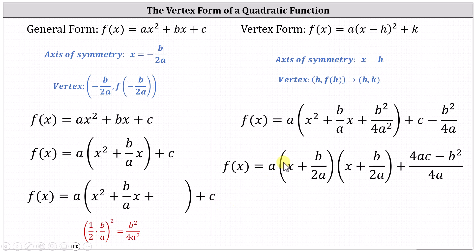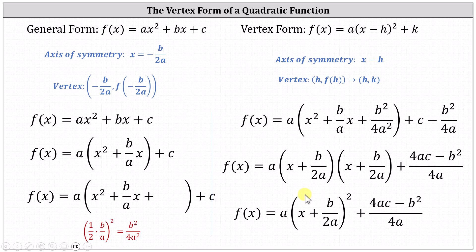This gives us f(x) = a times (x + b/2a)², then combining c minus b²/4a by obtaining the least common denominator of 4a — multiplying c by 4a/4a — we get c − b²/4a = (4ac − b²)/4a. So in vertex form: f(x) = a(x + b/2a)² + (4ac − b²)/4a.